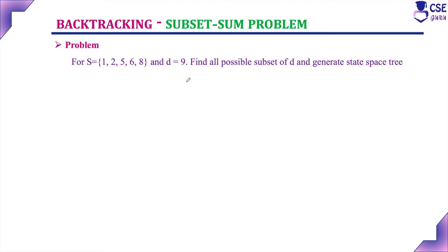In the previous example, we constructed the state space tree depth-wise. Whenever we reach a dead end, we backtrack to the previous step and consider the other possibility. But for this example, we are going to construct the state space tree level-wise. In both cases, we construct the complete state space tree. For each node, there are only two possibilities: adding that particular element, or not adding it.